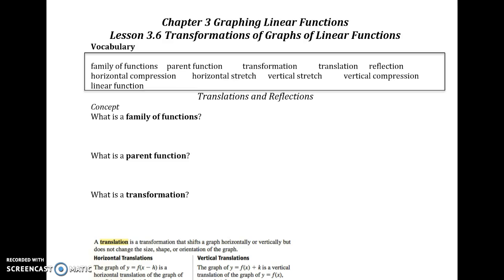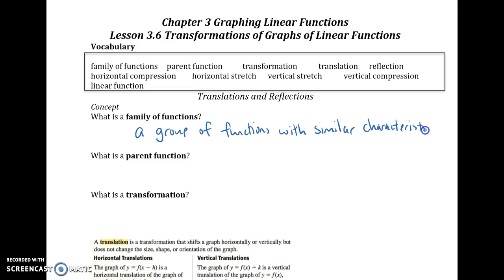A family of functions is a group of functions with similar characteristics. We're looking specifically today at linear functions, so all of these graphs are going to be non-vertical slanted lines. Eventually when we do transformations of quadratics, they'll all look like U's. The next lesson we're going to do transformations of absolute value functions, which are going to be V-shaped. So they all share some kind of similar trait.